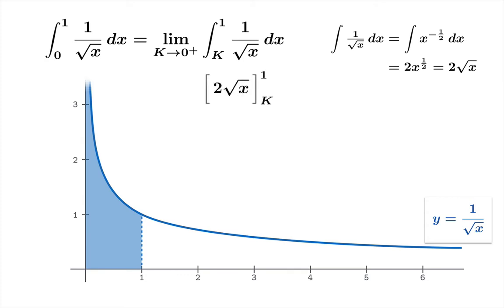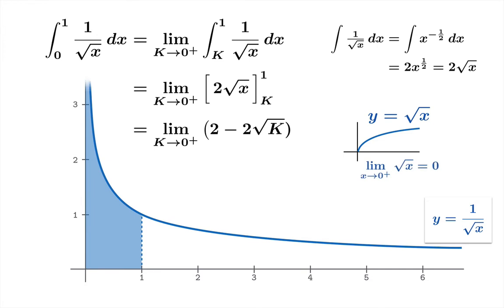So we've got 2 root x which we'll evaluate at 1 and k and subtract and then we'll take the limiting value as k goes to 0 from the right. 2 minus 2 root k but the square root function actually is pretty well behaved at the origin as you approach from the right that limiting value is just 0. So this limit in question here on the left 2 minus 2 root k as k goes to 0 from the right we're just going to get 2.